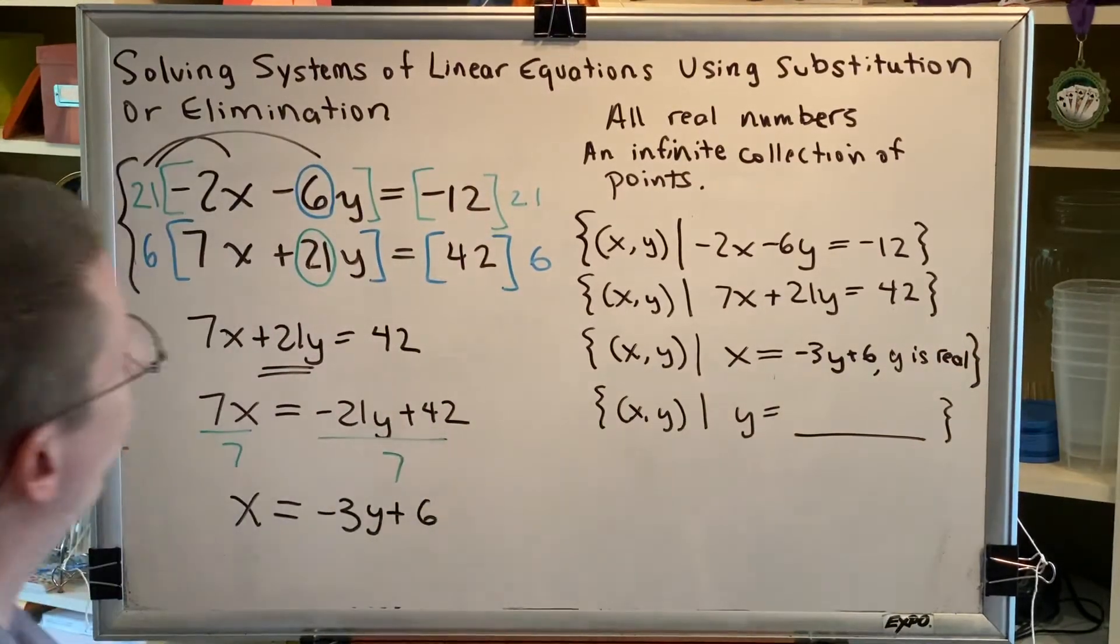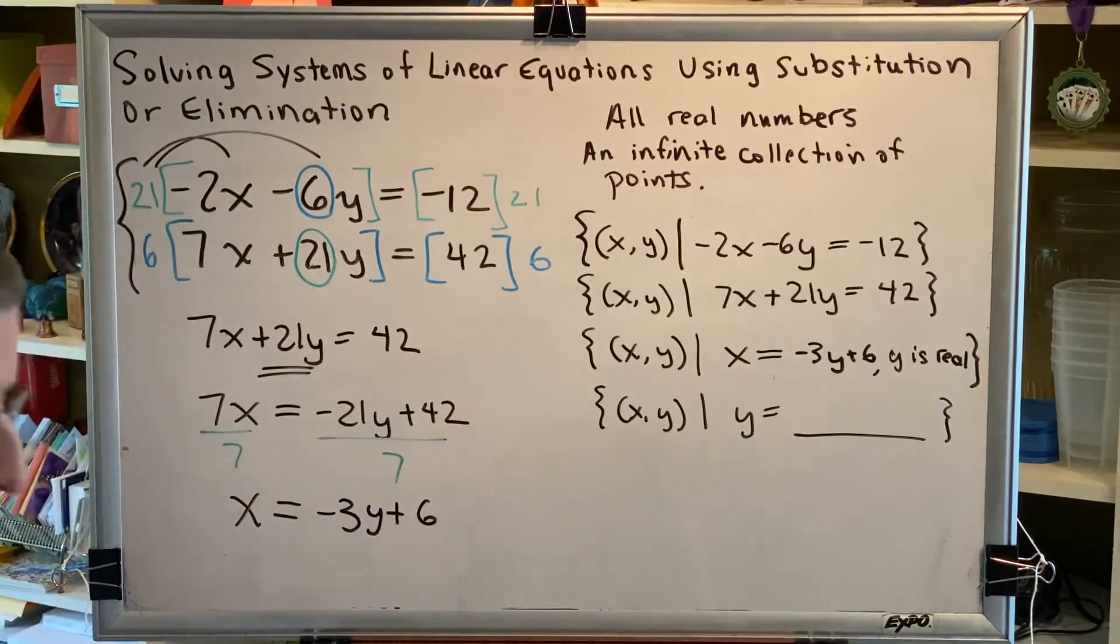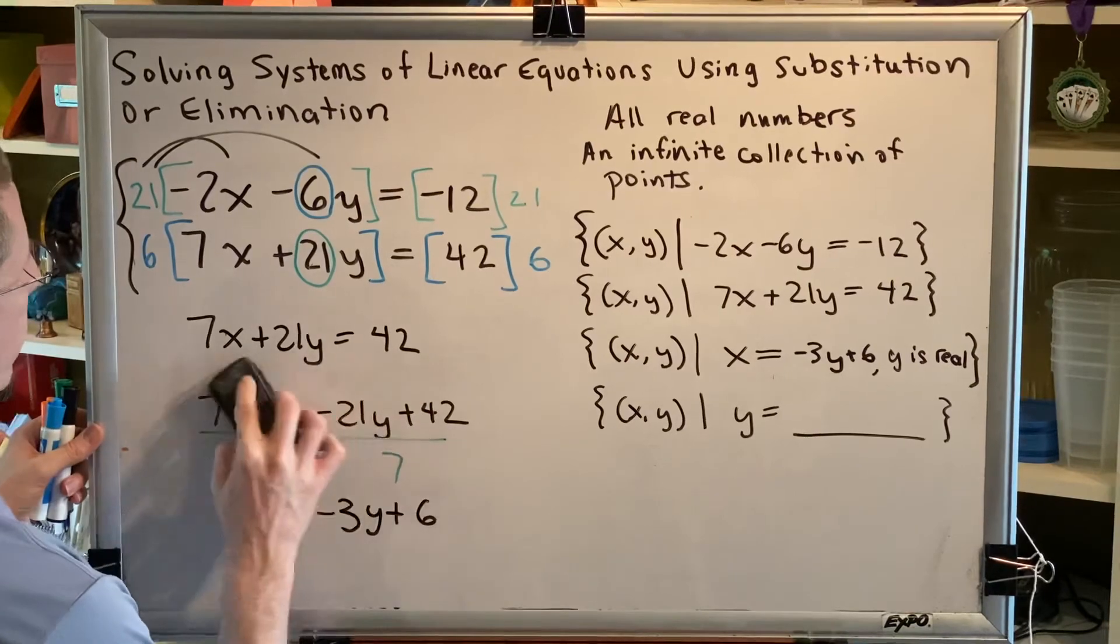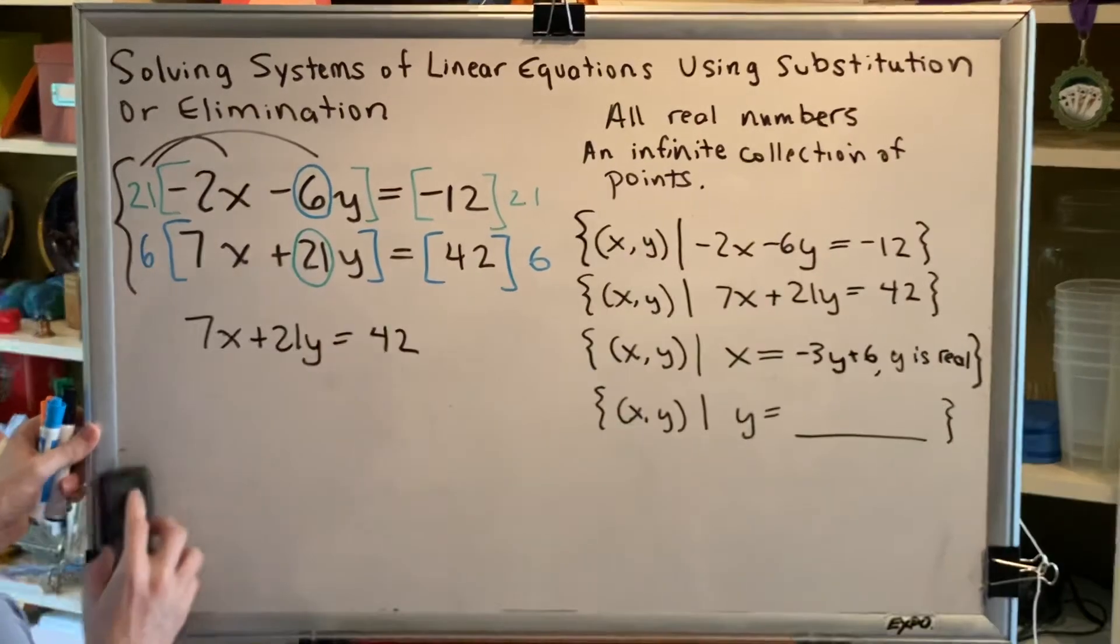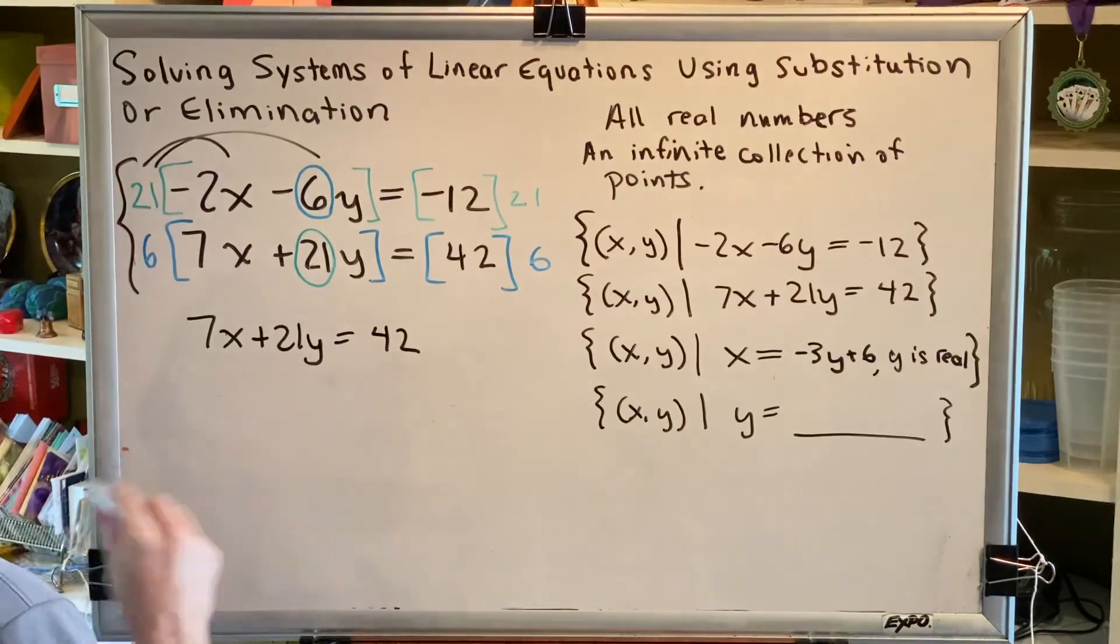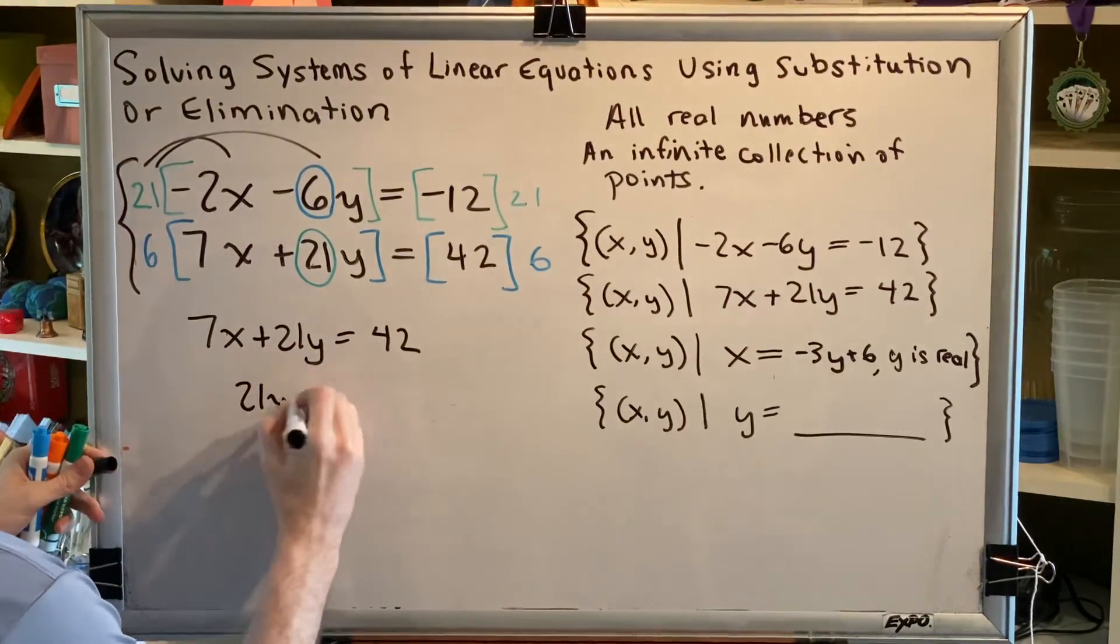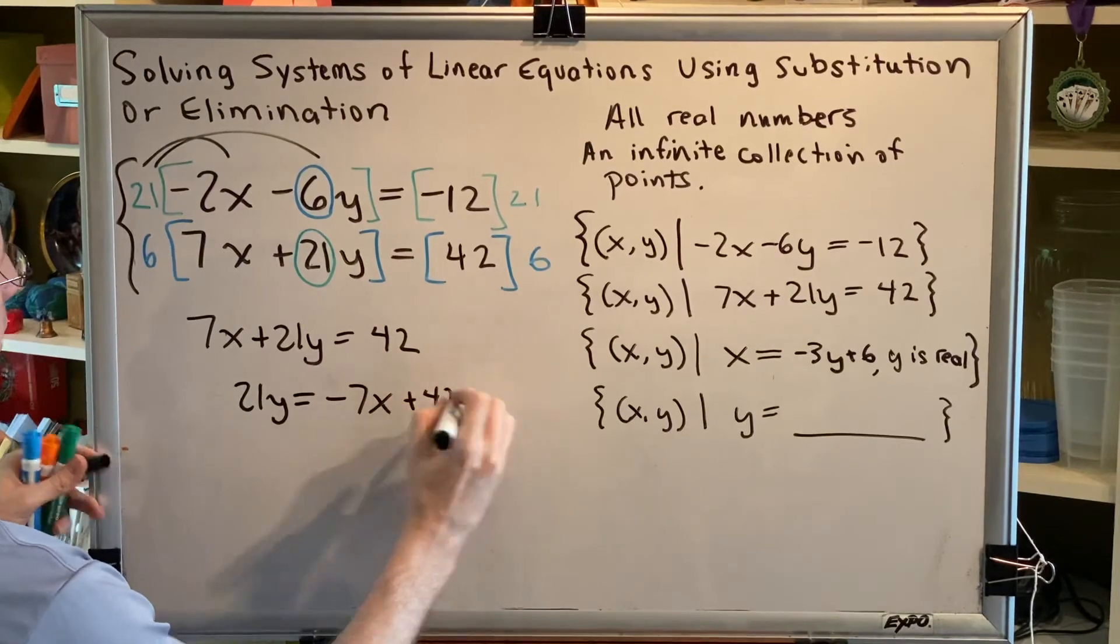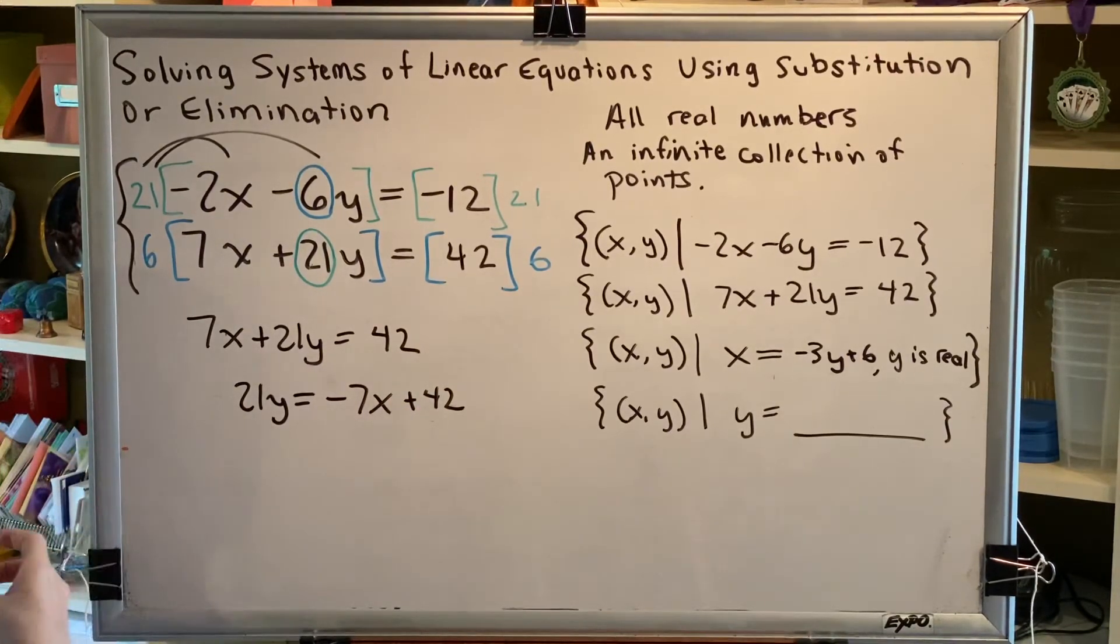All right. What about if the solution required us to write what y equals? We'd use a very similar approach, but we would solve for y instead. So we would have 21y equals negative 7x plus 42. And this time we would divide by 21 on both sides.